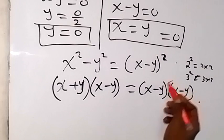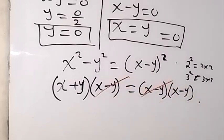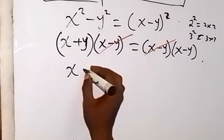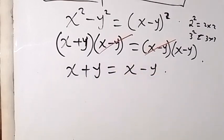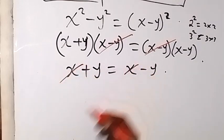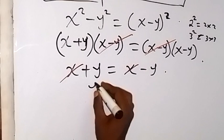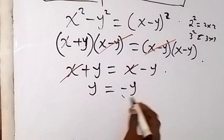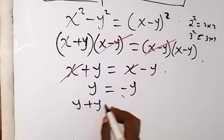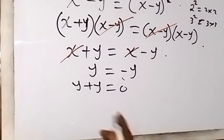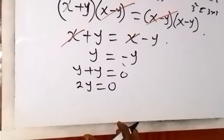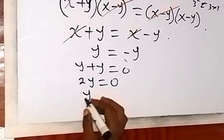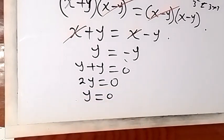This leaves us with x + y = x minus y. Subtracting x from both sides, we get y = minus y. Bringing minus y to the left gives y + y = 0, so 2y = 0. Dividing both sides by 2 gives y = 0.